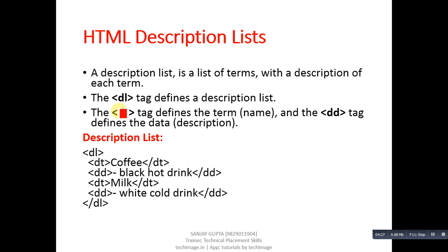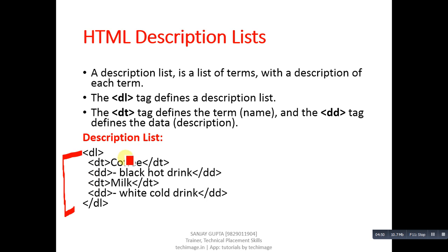The third type of list is description list. A description list contains two main tags: dl and dt. dl stands for description list, dt is the description term, and dd is the description data. You have to use this combination to implement a description list. You can type this code in your HTML editor and execute it with a web browser.